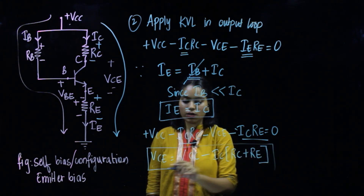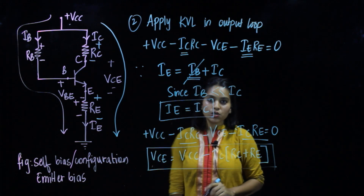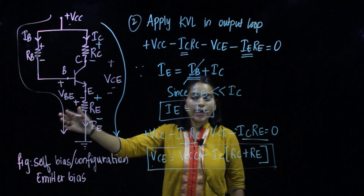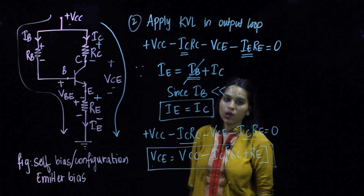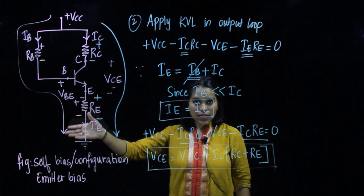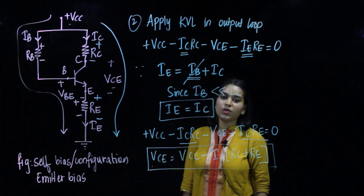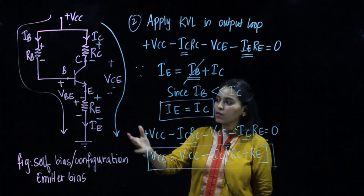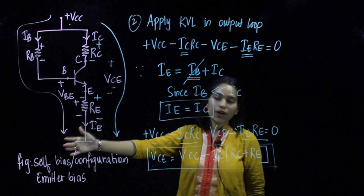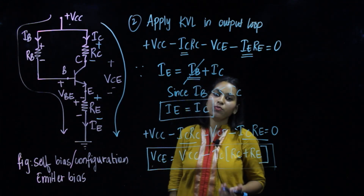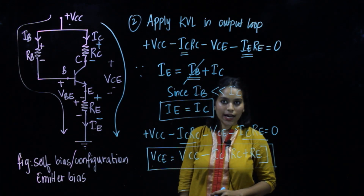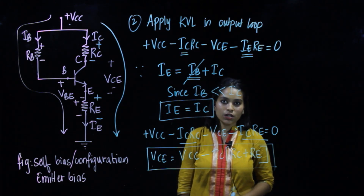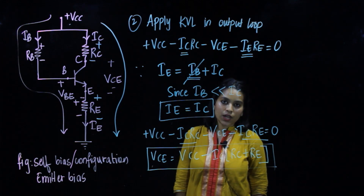So we have found both IC and VCE. We applied KVL on the input loop to get IC — first finding IB and then using IC = β·IB — and we applied KVL on the output loop to get VCE. This is all for the self-bias configuration, also called emitter-bias configuration. I hope it was useful. Thank you for watching.